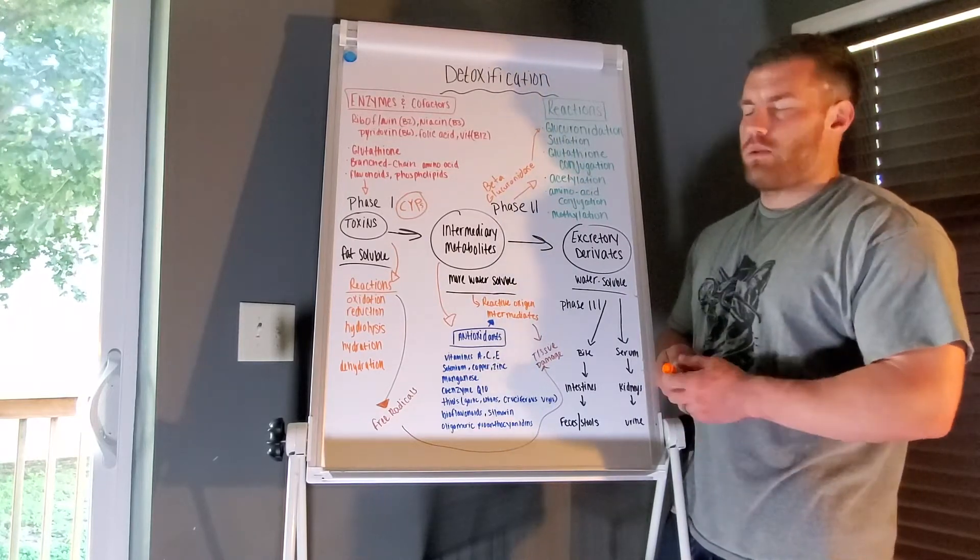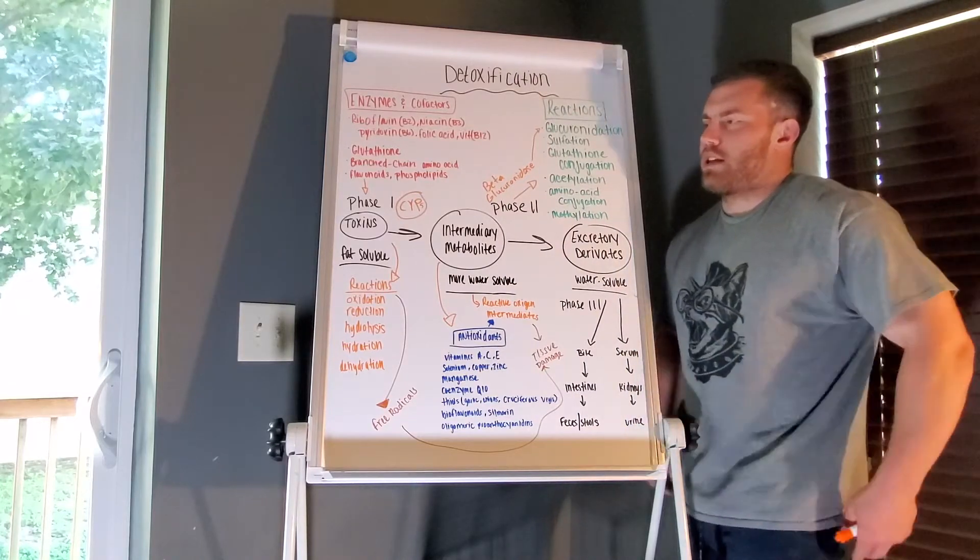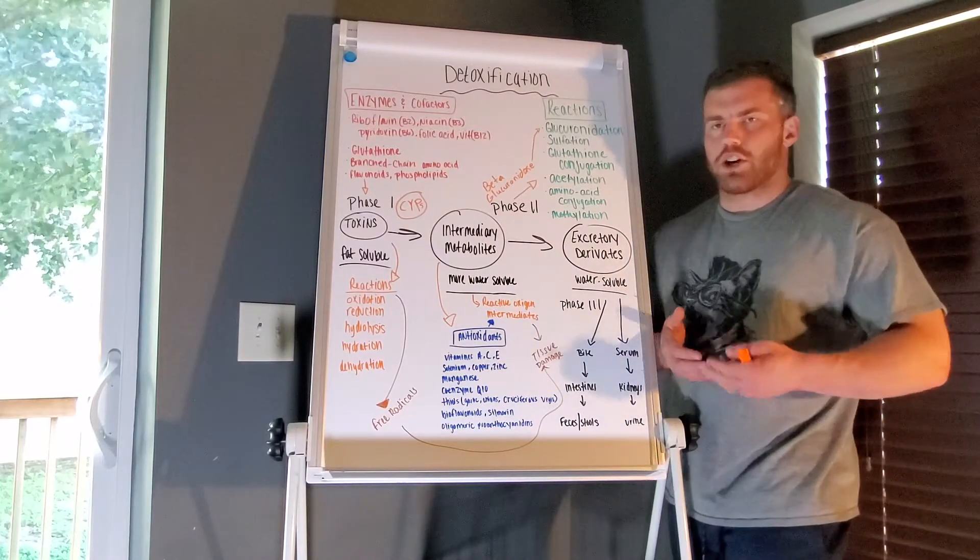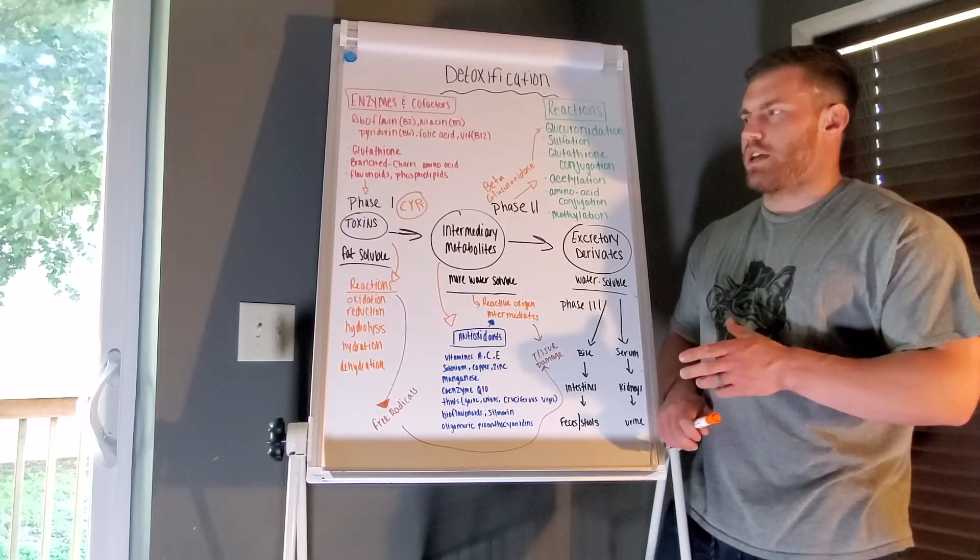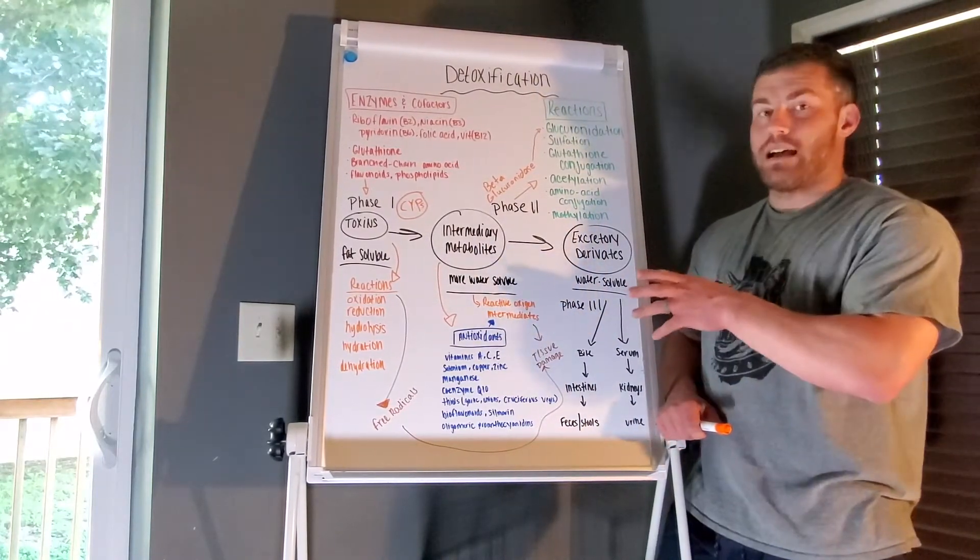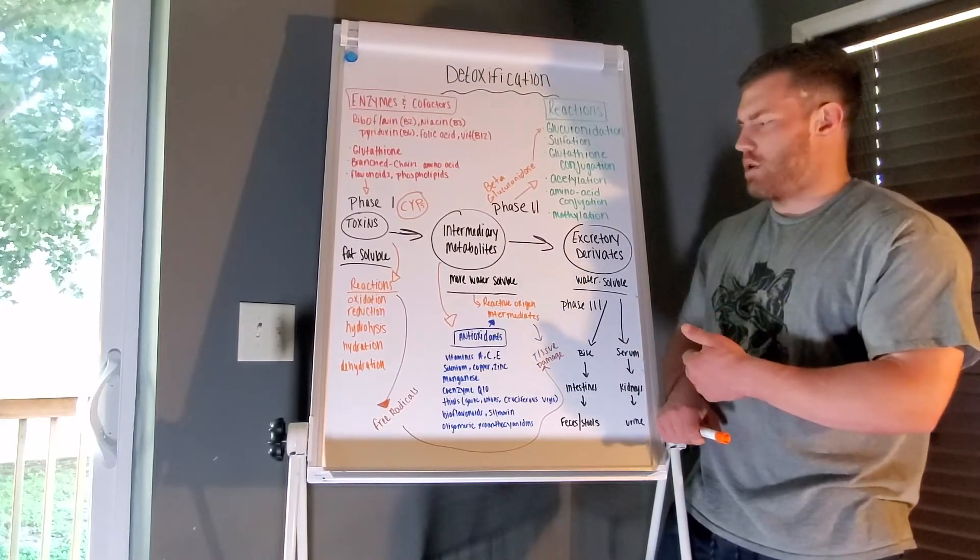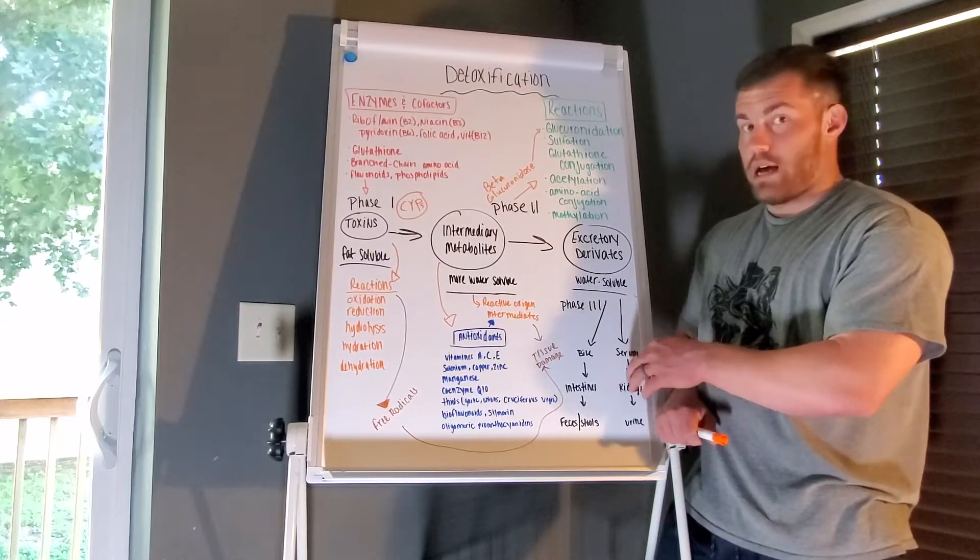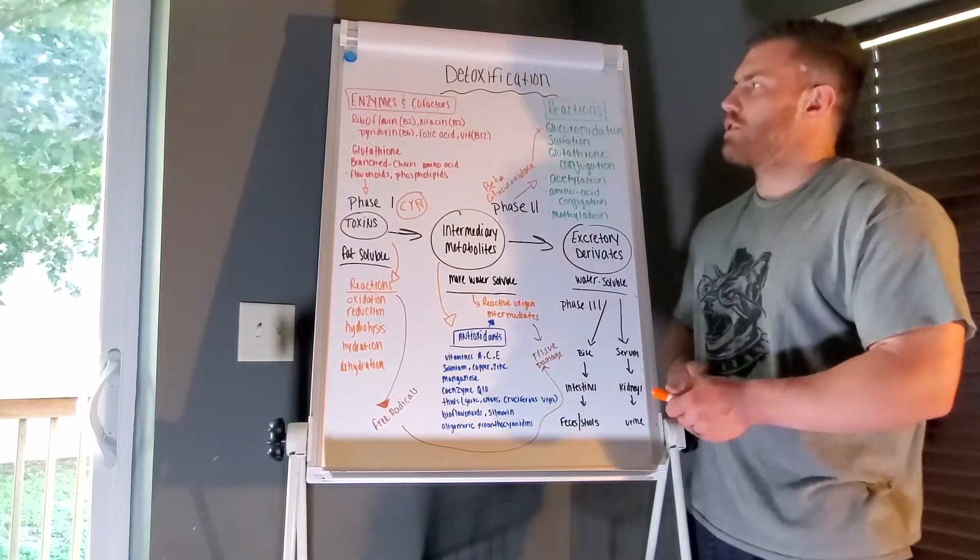Most detoxification is occurring in the liver and the gut. It is occurring in other areas, but it depends on which part of the process we're in and what we're talking about. We have breakdown of toxins and breakdown of certain molecules, and we also have excretion of certain molecules, which is where the gut, bowels, urine, and all that comes into play.